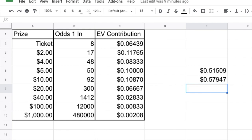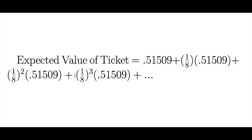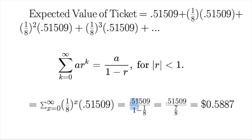We could continue running through this process until the expected value of the ticket eventually converges, but there's actually a shortcut we can use. We're calculating the expected value of the ticket by taking the sum of the expected values of the cash prizes and then multiplying the sum by the 1 in 8 chance that we win the ticket itself. We then need to multiply by 1/8 again, getting 1/8 squared, then 1/8 cubed, and so on. This is a form of the geometric series, and using the geometric series formula we can find this infinite sum. It turns out to be about 59 cents, which is the expected value of our lottery ticket.